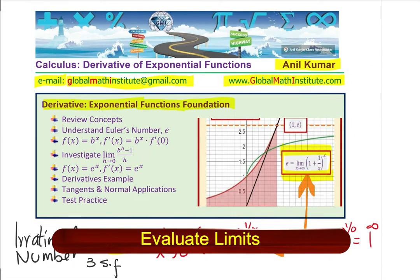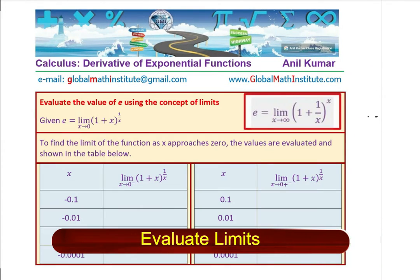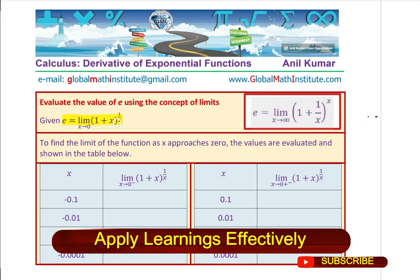Now, let us see, how do we evaluate this value? As already shared with you, e is given by this particular formula: limit x approaches 0, 1 plus x to the power of 1 over x. So, if we approach from both the sides, and if the value approaches a particular value, then we are sure that is the value. We are only interested in three significant figures.